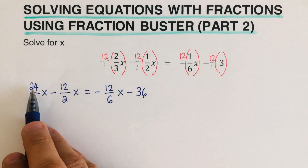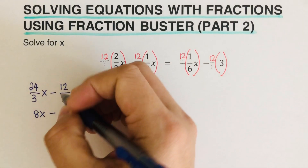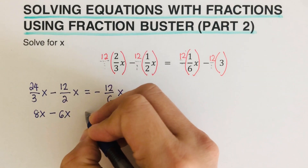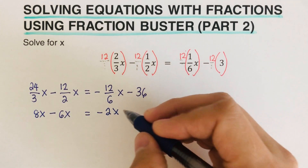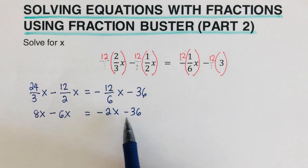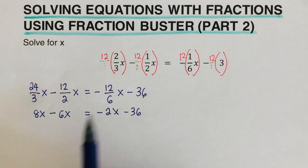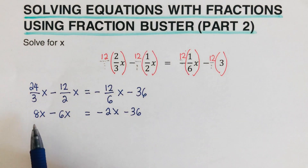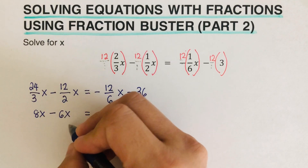Now we simplify: 24 divided by 3 is 8x, minus 12 divided by 2 is 6x, equals negative 2x (since 12 divided by 6 is 2) minus 36. At this point both sides of the equation have no more fractions — that is the fraction busting process. Combining like terms on the left: 8x minus 6x gives 2x.